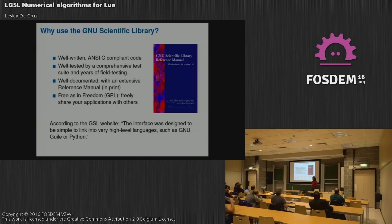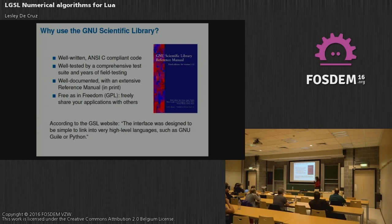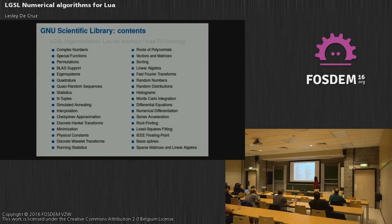Before going further, let me explain why the GNU Scientific Library is an interesting choice. First, it's very well written — modern object-oriented C, ANSI-compliant, very well tested with a massive test suite, and years of field testing, which is important if you really depend on these calculations. It has a very good reference manual available in print, and importantly, it's free as in freedom — GPL licensed, so you can freely share your applications.